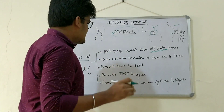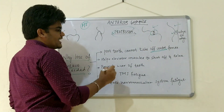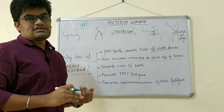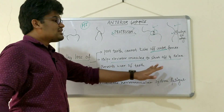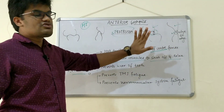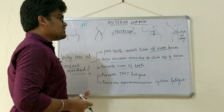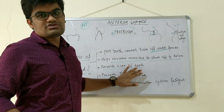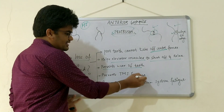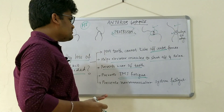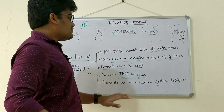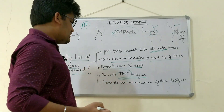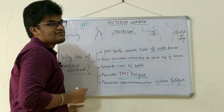Secondly, loss of contact of the posterior teeth helps the elevator muscles — masseter, medial pterygoid, and temporalis — to shut off and relax. Third, there is prevention of wear of the teeth, as shear forces from posterior contact would cause wear. Fourth, there is prevention of TMJ fatigue, since posterior contact leads to muscular fatigue which affects the temporomandibular joint. Lastly, it prevents neuromuscular system fatigue overall.